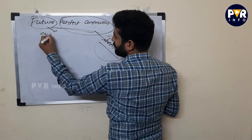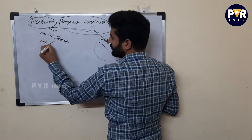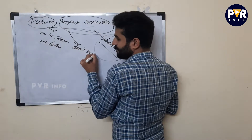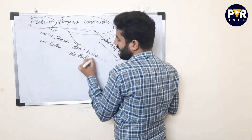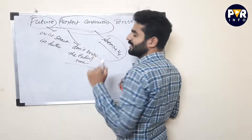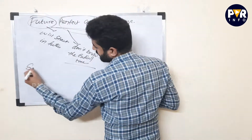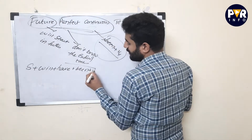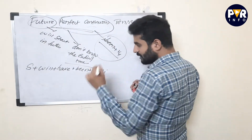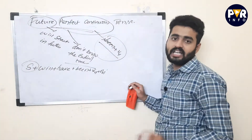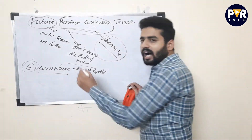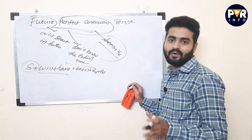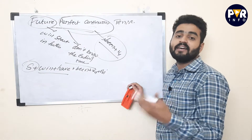So future perfect continuous means: will start in future and we don't know the ending time. The grammatical formula is: Subject + will have + been + V4 + object. This formula is the same for all subjects — I, you, he, she, they, and naming words — all use 'will have been'.